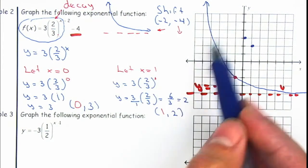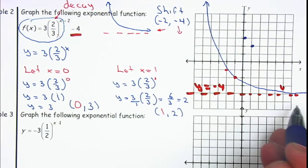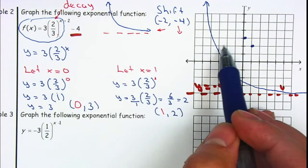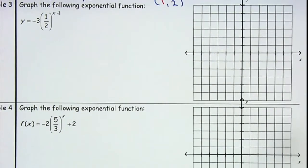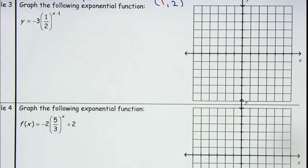You want to double-check — once you finish, you want to double-check that it looks what it's supposed to look, so you want to be able to compare it. Now let's continue with example number three. On example number three, we need to be able to graph the following exponential function. First thing, we need to decide if this is going to be an exponential growth or an exponential decay.